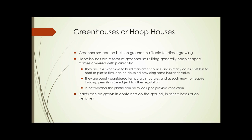Greenhouses and hoop houses can be built on ground that's unsuitable for direct growing — paved ground or brownfields — you can build right over the top. Hoop houses are a form of greenhouse, generally utilizing hoop-shaped frames covered with plastic film. They're less expensive to build than greenhouses, and in many cases cost less to heat, as the plastic films can be doubled and therefore provide some insulation value. Another benefit is they're usually considered temporary structures and, as such, may not require building permits or be subject to the same regulations as a regular building. And in hot weather, the plastic can be rolled up on the sides to provide ventilation.